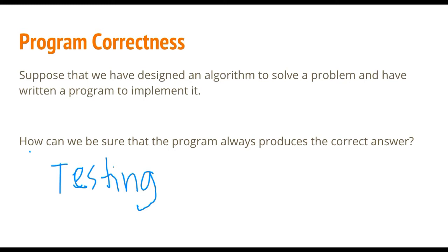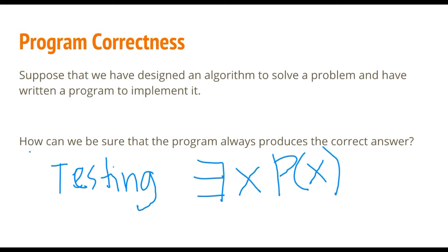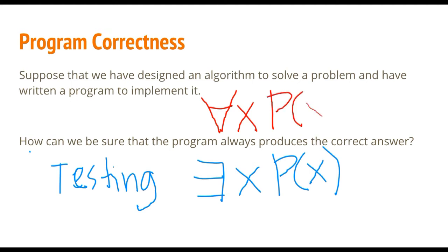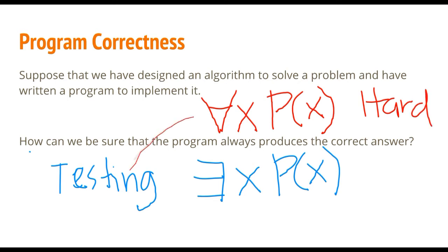To be more specific, testing is only proving the existential case of a certain property of your program. However, our major concern is to come up with universal correctness for a program, and this is something testing cannot provide.